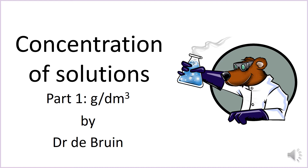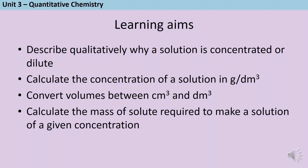This is a video for Unit 3 of AQA GCSE Chemistry and Combined Science, the Quantitative Chemistry Unit, and it's the first video where we're going to look at concentration. If you're taking foundation tier then this is the only video that you need, but if you're sitting the higher tier papers there's also a second video which goes into the higher tier only content. There are lots of questions included in this video so you can practice the maths, and there's a link to an accompanying worksheet in the description if you'd like more.